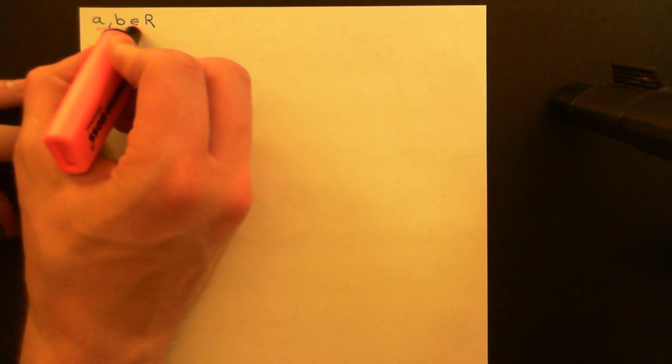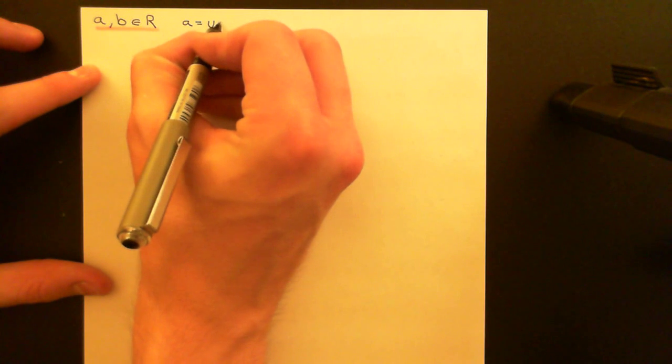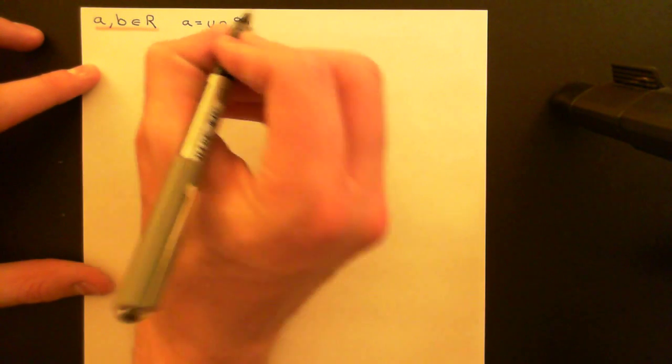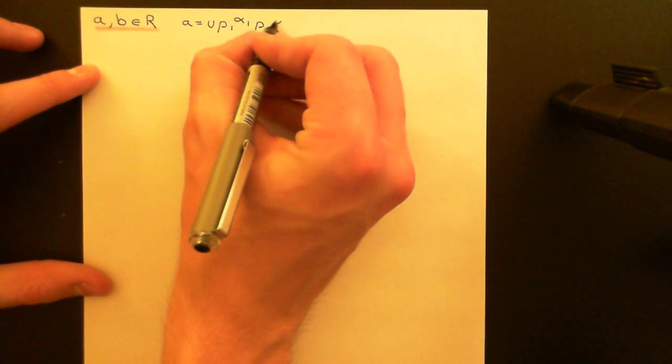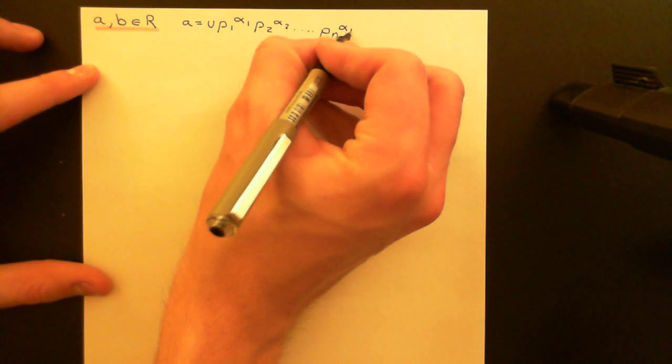Let's start off by taking two elements of our unique factorization domain. So we'll have A and B from our unique factorization domain R. Let's suppose that neither of them is equal to the additive identity, and that also they're both not units. So let's write out A and B. A is equal to some unit, and then we'll have the irreducibles or the primes — since we can now call them that — at P1 to the power of alpha 1, P2 to the power of alpha 2, all the way along to Pn to the power of alpha n.